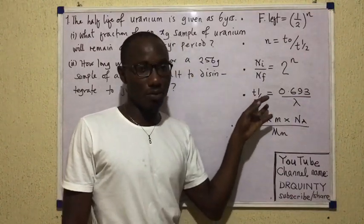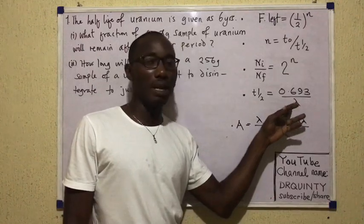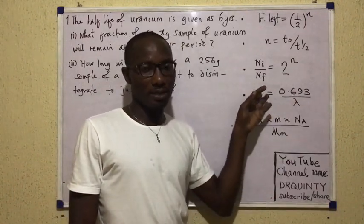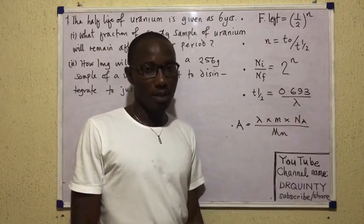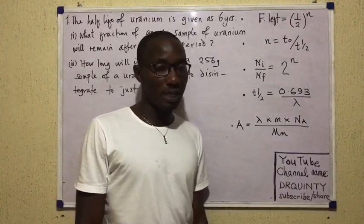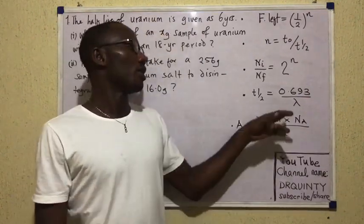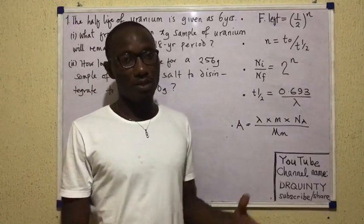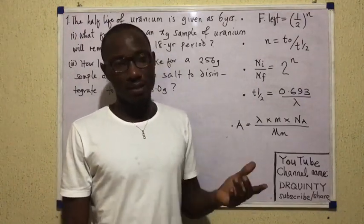It says half-life is equal to 0.693 over lambda. Lambda there is called the decay constant. So I could bring lambda up and take half-life down and the formula would still be valid. This value of 0.693, which is a constant — which is ln 2 actually — is sometimes reported to four decimal places, so you may see a book use 0.6932. That's still in order.